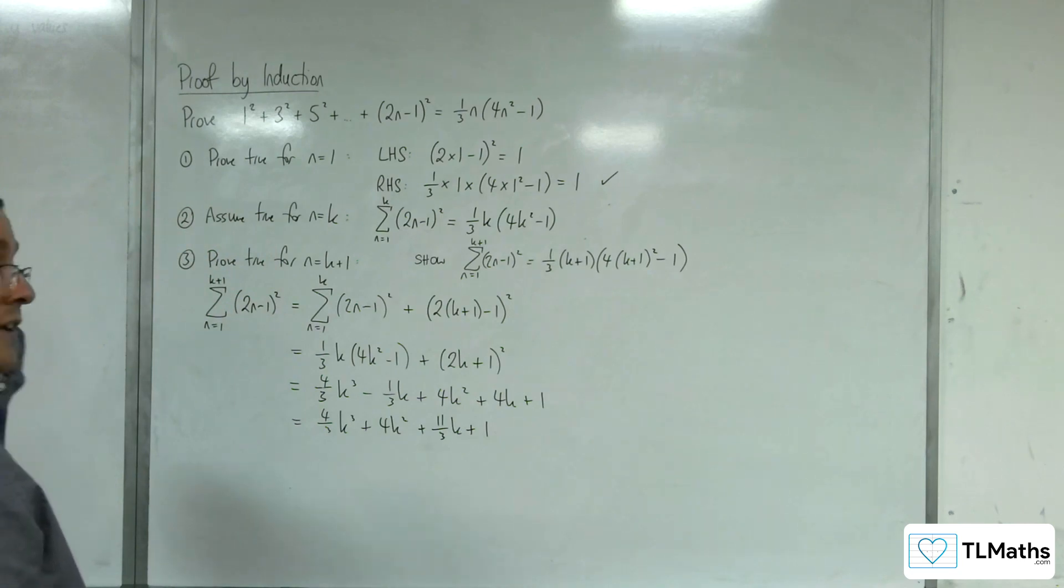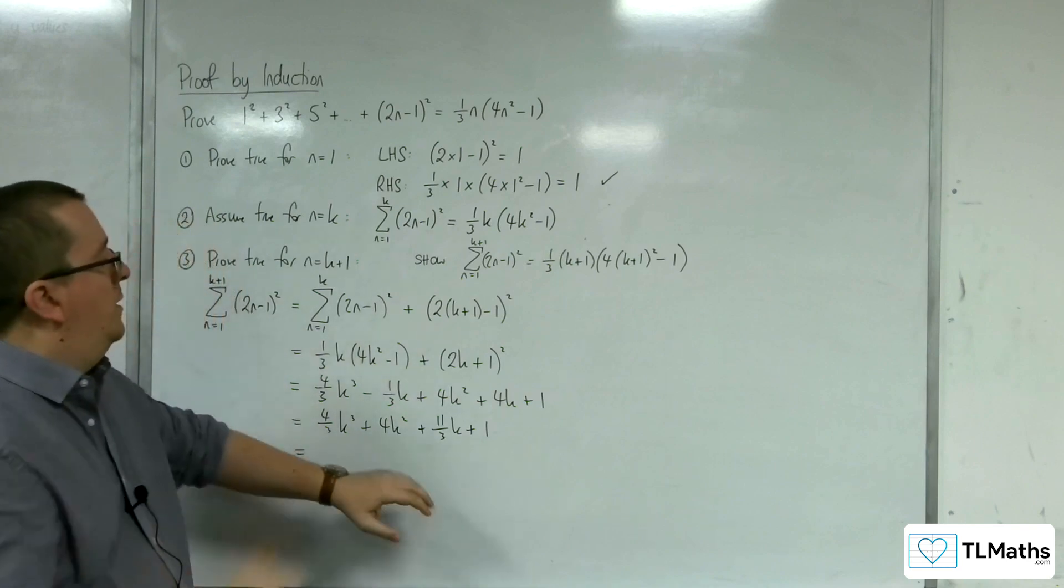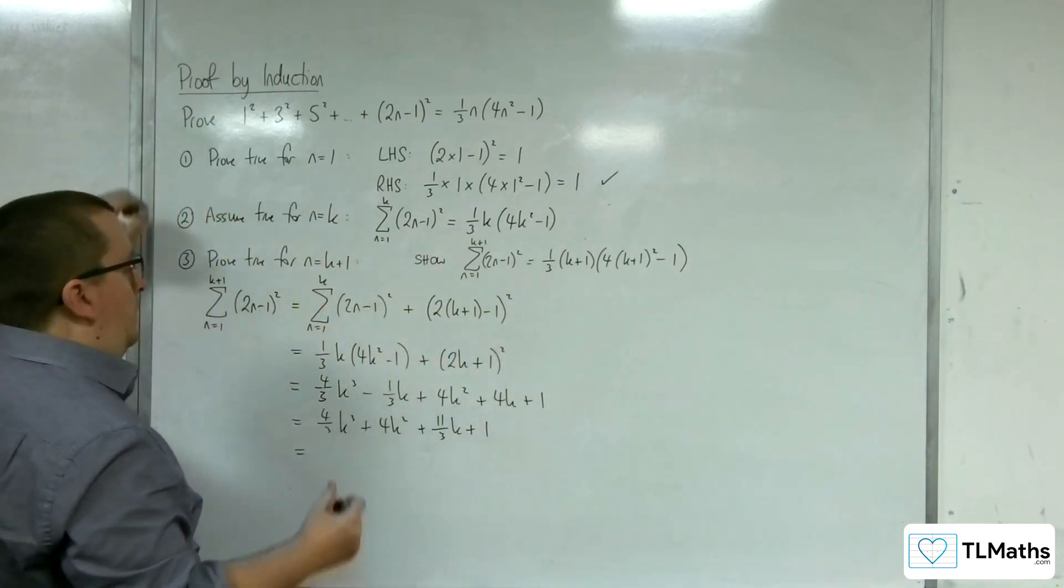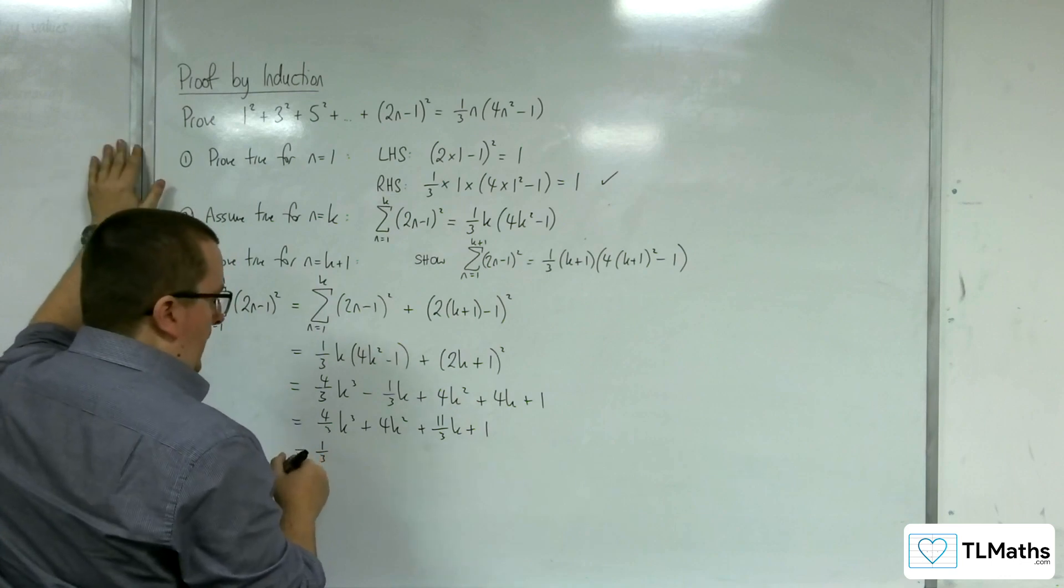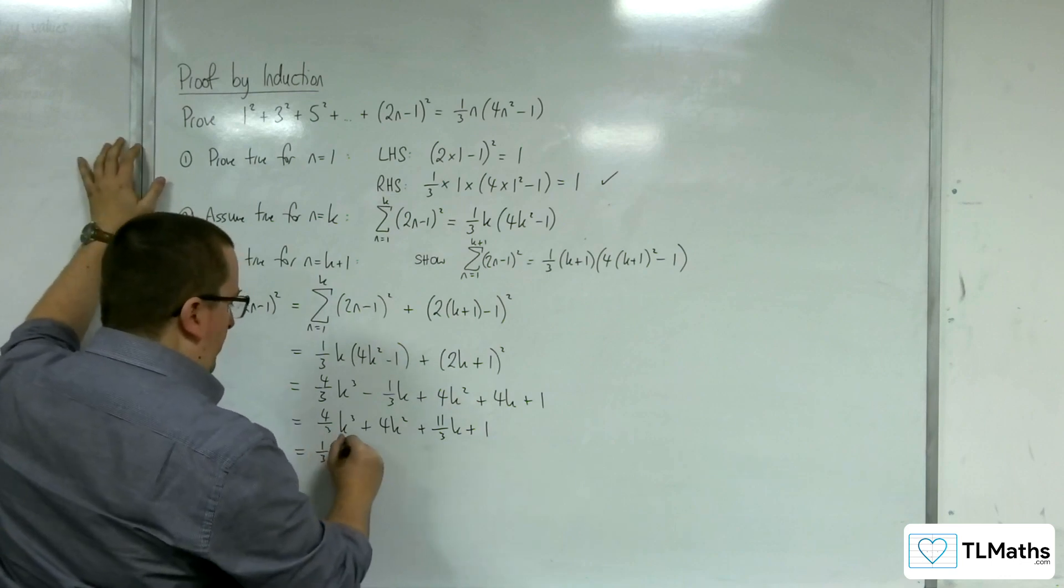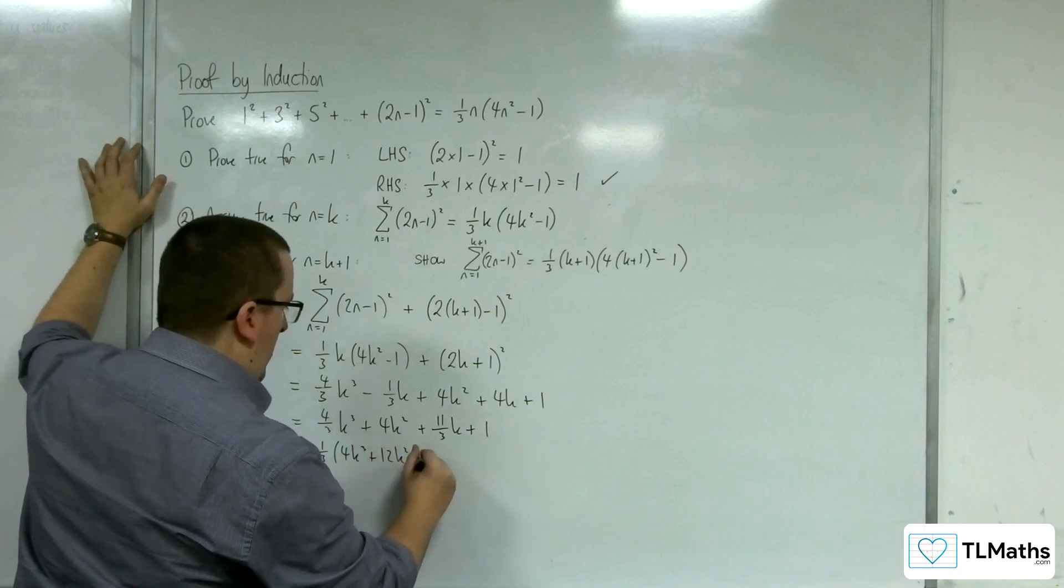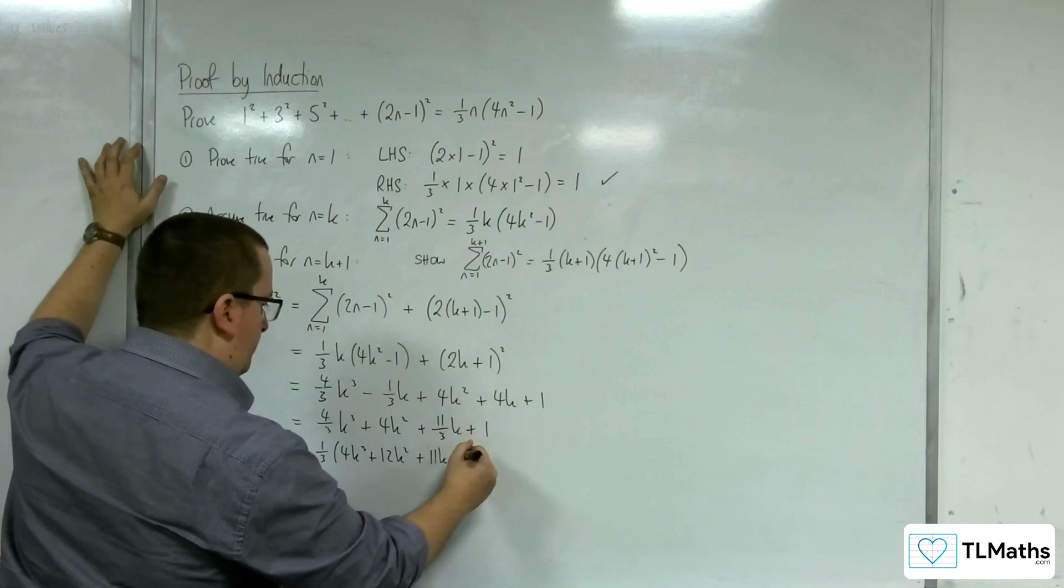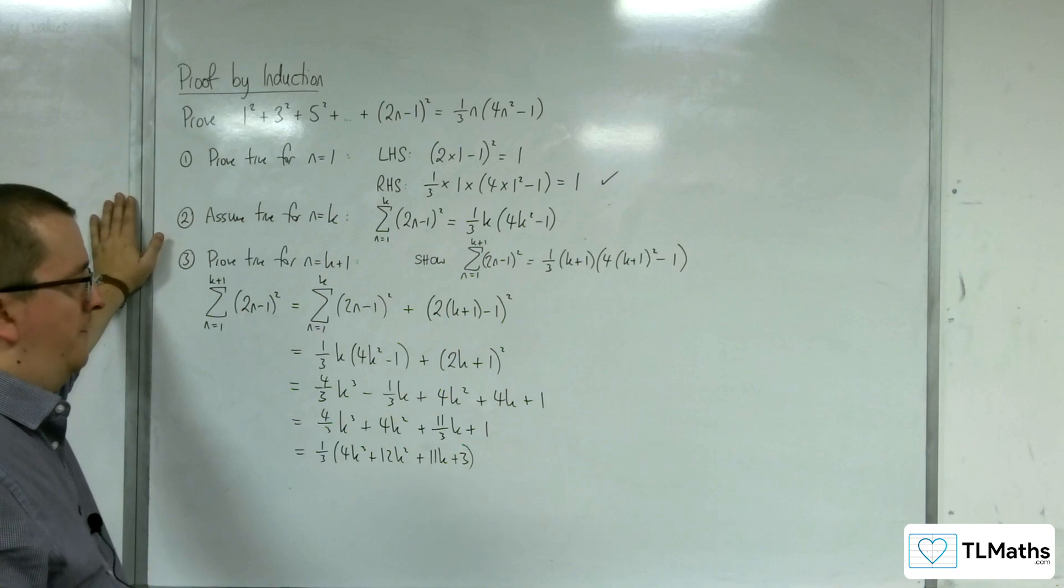Right, so I've got it expanded. Okay, so next job is I want to bring it back in. I want to get it into this format. So if I can pull the third out to start off with, then I'm going to be left with 4k cubed plus 12k squared plus 11k plus 3. Okay, so I can do that first.